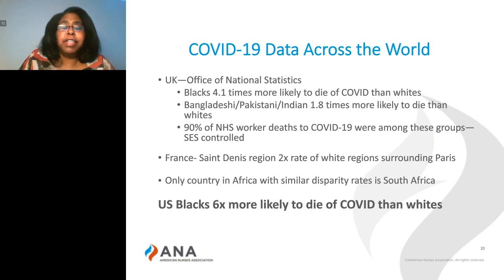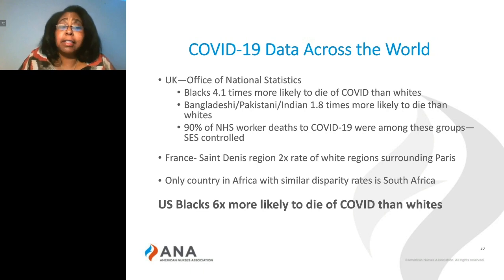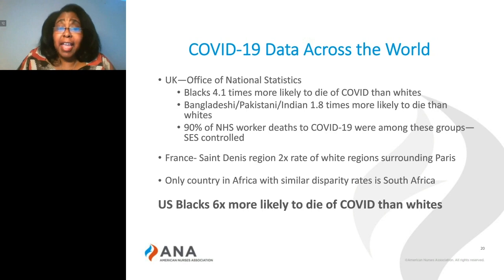When we look at COVID-19 data across the world, we see disparities for Black populations, though not to the same extent as in the U.S. In the UK, Blacks are four times more likely to die of COVID than whites, and South Asians — namely Bangladeshi, Pakistani, or Indian — are almost twice as likely to die than whites. This has particularly affected the National Health Service, as 90% of NHS workers who died during the COVID-19 epidemic were among these groups — Blacks and South Asians.